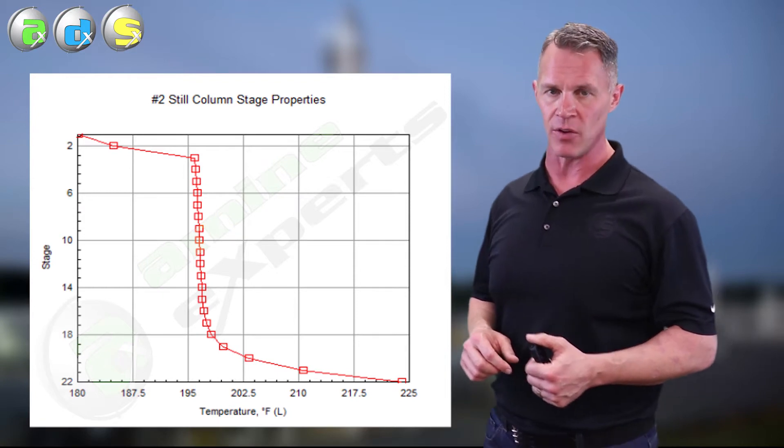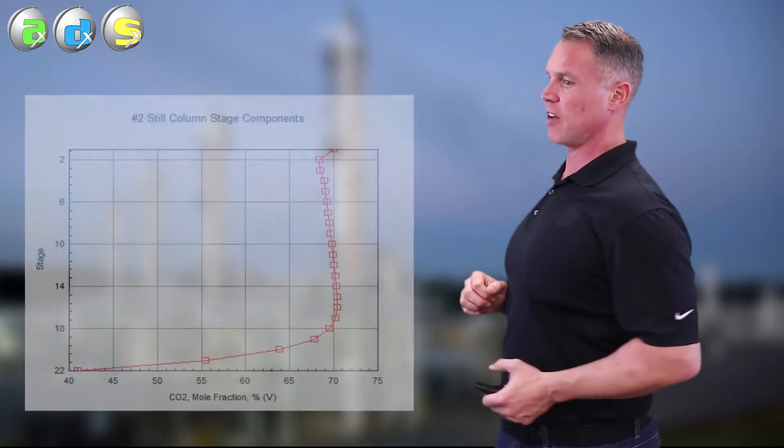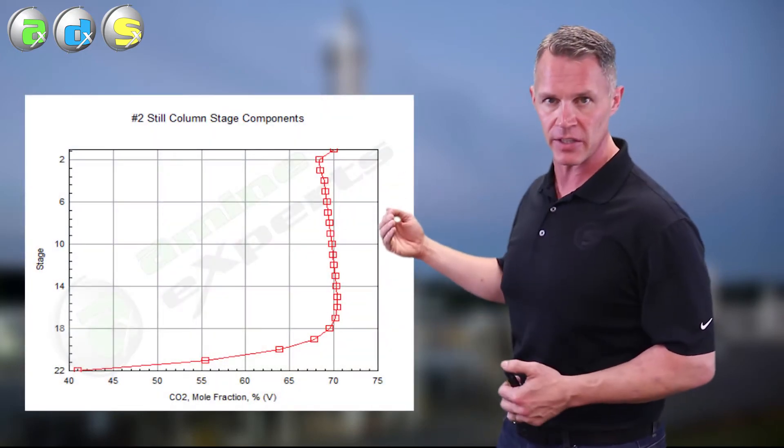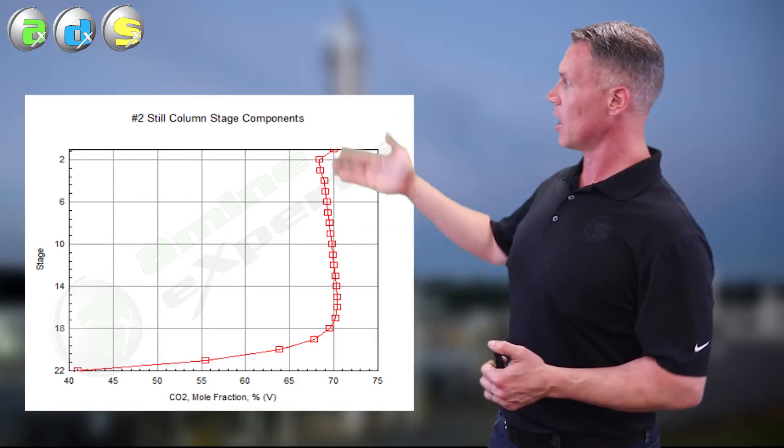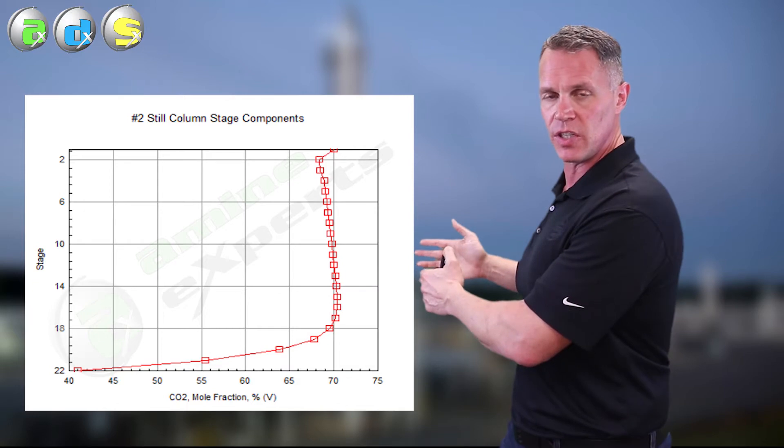It then goes into the reboiler, which finished the job of heating. We were boiling the amine in the reboiler, but we weren't boiling it very hard. And the problem there is, if we look at the corresponding CO2 profile in that regenerator, when we're not heating the amine up, we're also not removing CO2.